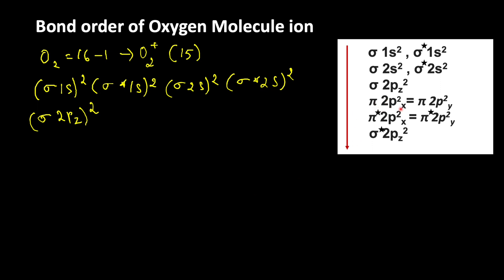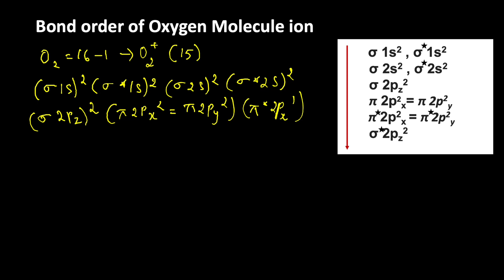Note that pi 2px and pi 2py orbitals are degenerate (same energy). Electrons enter into pi 2px and pi 2py, then pi star 2px and pi star 2py. So the configuration continues: pi 2px², pi 2py². Since O2+ is formed by losing one electron, only one electron remains in pi star 2px¹.